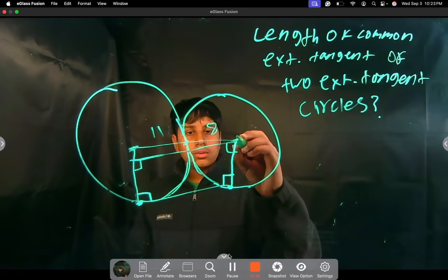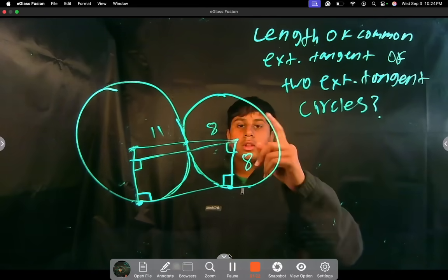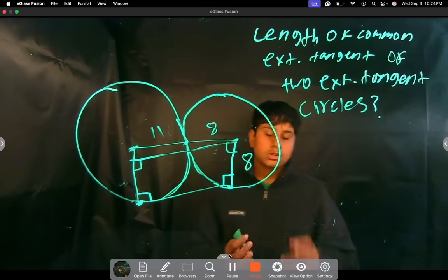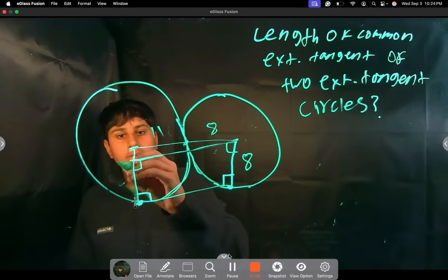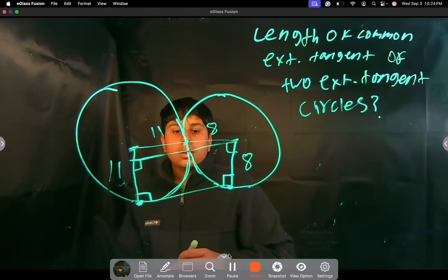We know that this length is 8 because from the center of any circle to any point on the edge of a circle is always going to be the radius. And same here, 11, right?